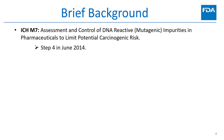Before proceeding, I would like to give a brief background on ICH M7. ICH M7 assessment and control of DNA reactive mutagenic impurities in pharmaceuticals to limit potential carcinogenic risk guidance reached Step 4 in June of 2014. This guidance for the first time outlined a variety of approaches to control potential mutagenic impurities (PMIs) based on the maximum daily dose, duration of use, and indication of the drug product. The limit to which a PMI is controlled based on these factors is defined as a threshold of toxicological concern, or TTC.